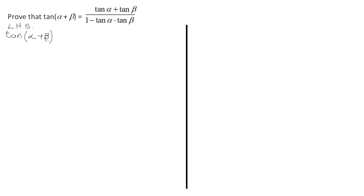Looking at the formula sheet, formula number 5 gives the quotient identity: tan = sin/cos. We use this because the right-hand side is a fraction, so we express tan(α + β) as the quotient: sin(α + β)/cos(α + β).